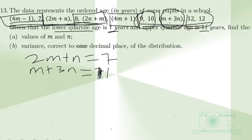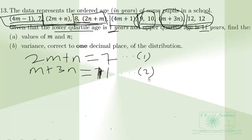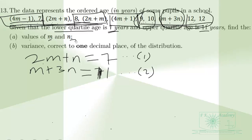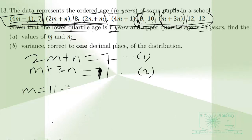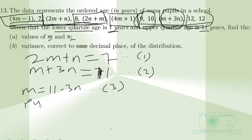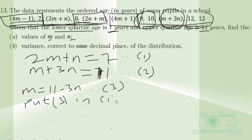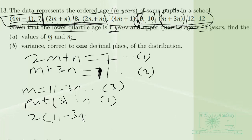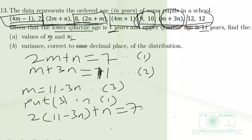So we have two equations — equation one and equation two — to solve for M and N. Let's make M the subject in equation two: M = 11 − 3N. Call this equation three. Substituting equation three into equation one: 2(11 − 3N) + N = 7.